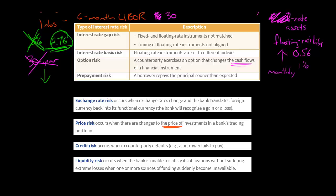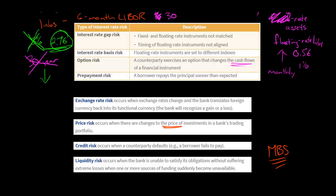Liquidity risk is where some kind of scenario causes funding problems. For example, there could be a run on the bank, the repo market seizes up, or the bank relies heavily on mortgage-backed securities or other asset-backed securities like credit card receivables that they bundle and securitize. All of a sudden, during a financial crisis, the bank has a hard time raising funds that way anymore. They might have to resort to extreme measures to raise capital at a much higher rate than anticipated, or worst case, the bank can't access any more sources of funding and could become insolvent.